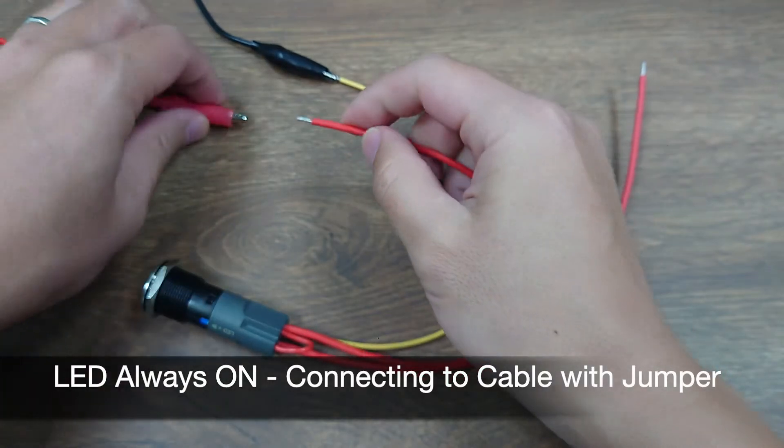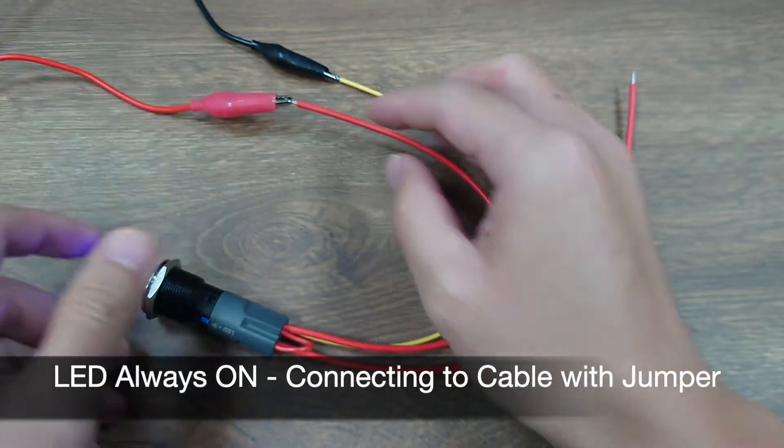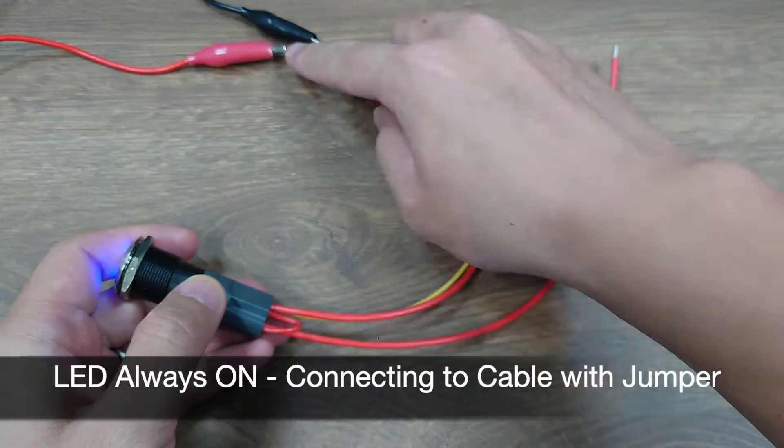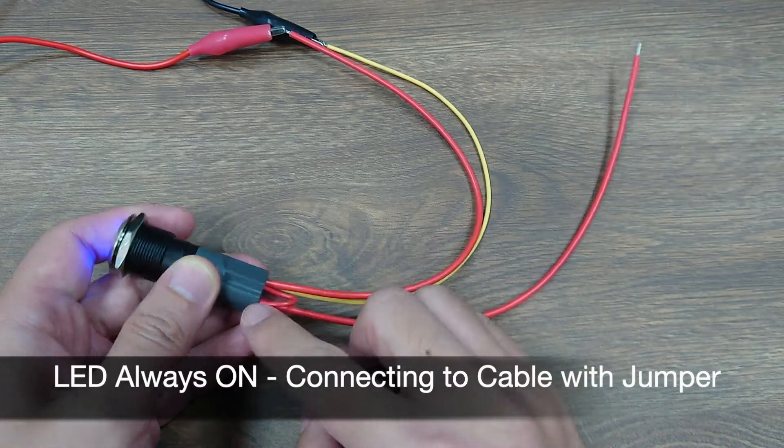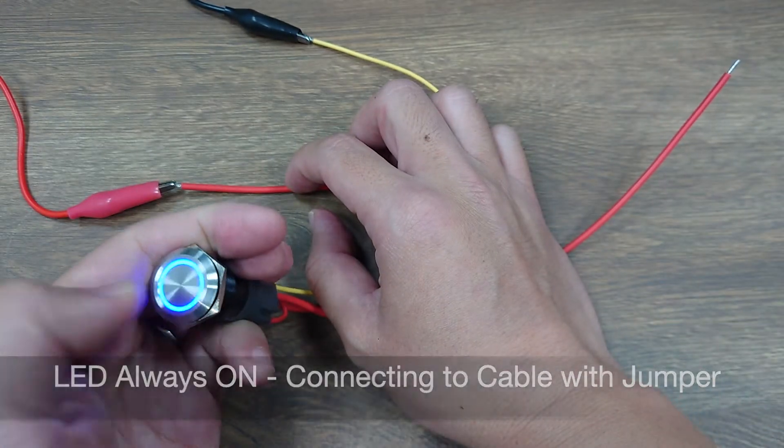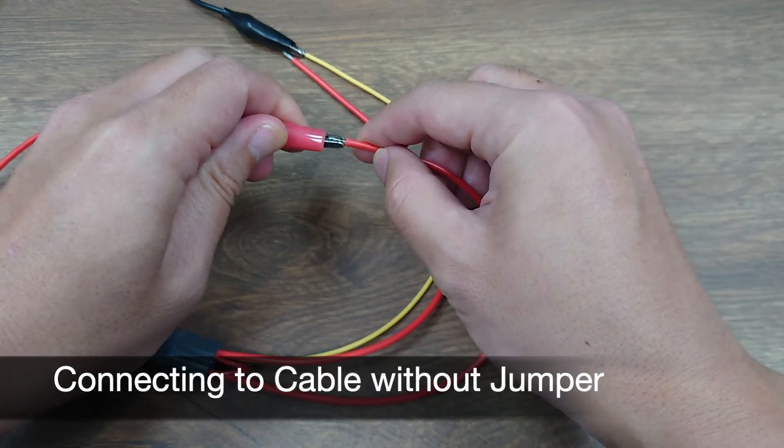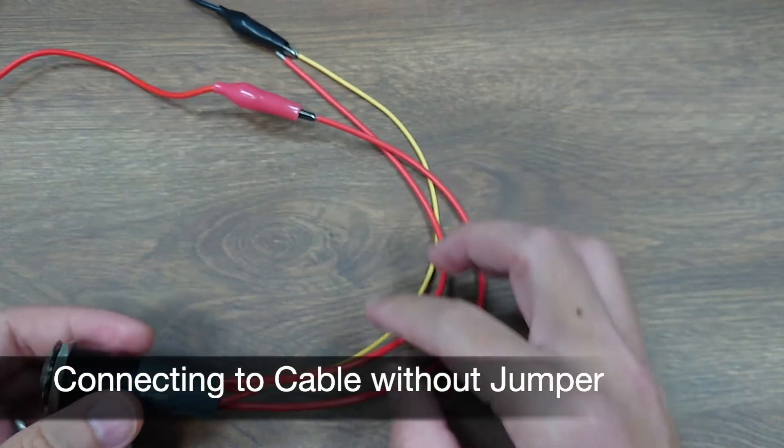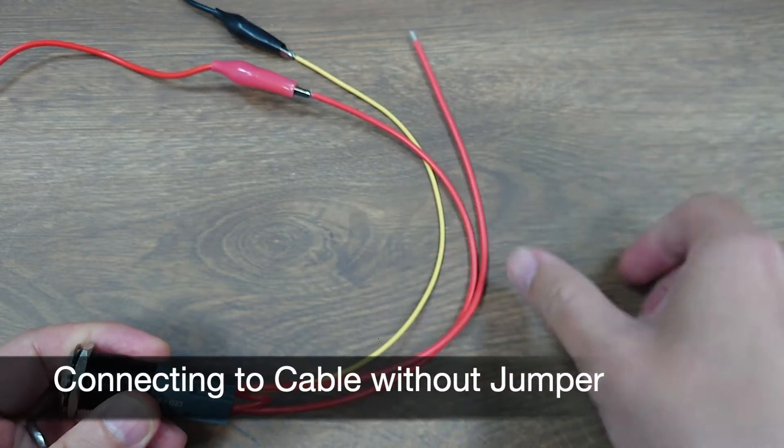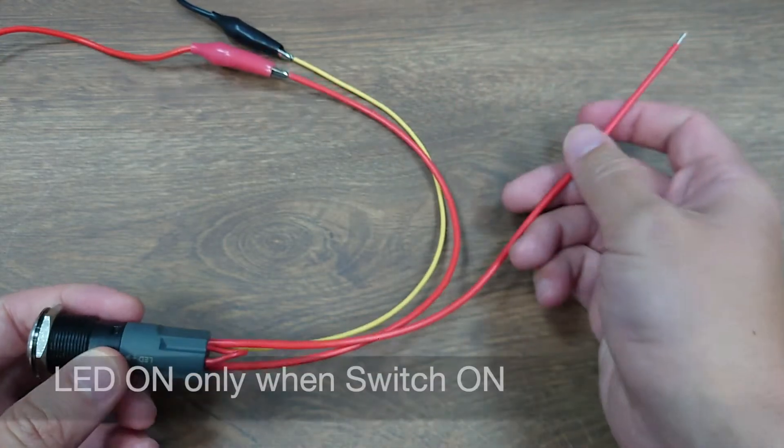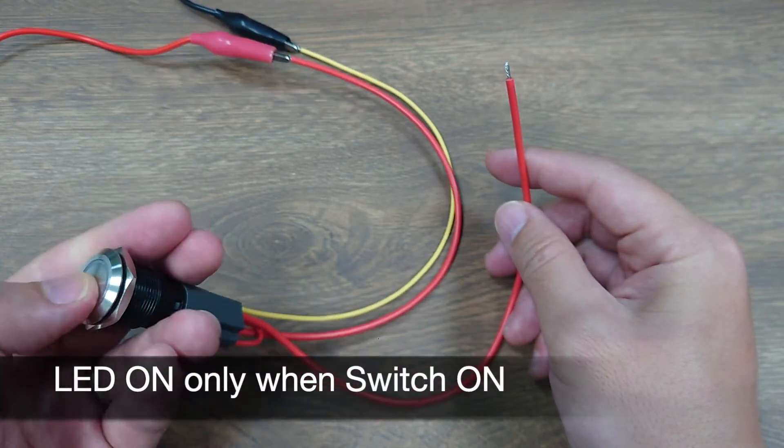So this LED will always be on. If you connect the DC positive to the other cable, the LED will be powered through the output cable that goes to the device, and therefore the LED will be powered together with the device. That is, the LED will be on only when the switch is pressed.